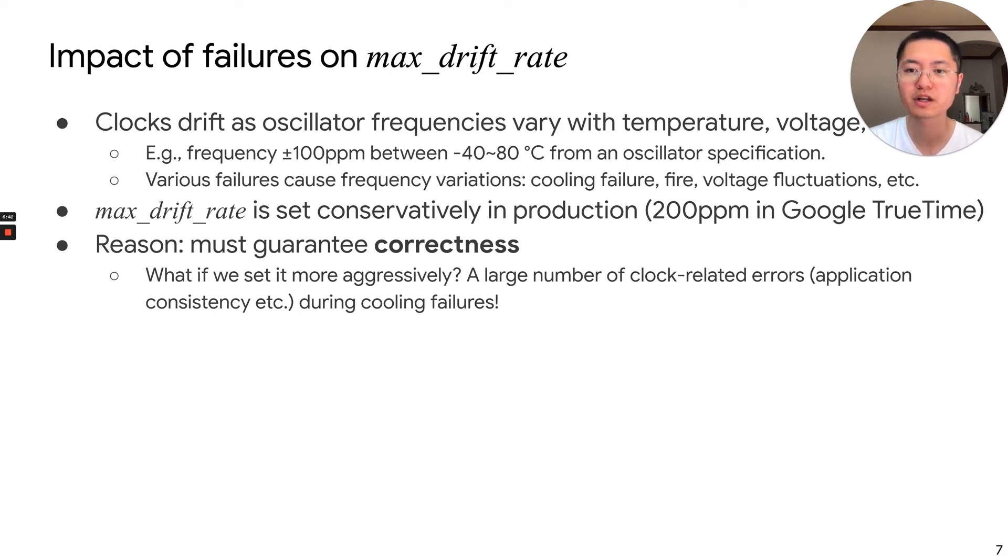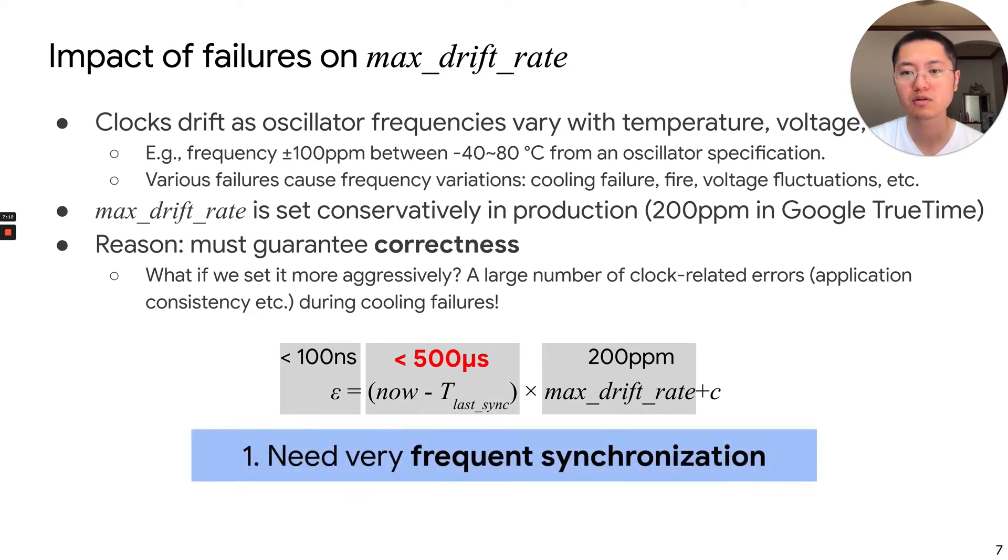So you may ask what if we can set it aggressively. Actually, we had such experience before when we set the maximum drift rate smaller. But when a cooling failure happens, it affects thousands of machines. And we get a huge number of clock-related errors. So the implication of setting a conservative max drift rate is that, if we want to provide a tight bound, the interval between synchronization must be small. So we must have very frequent synchronization.